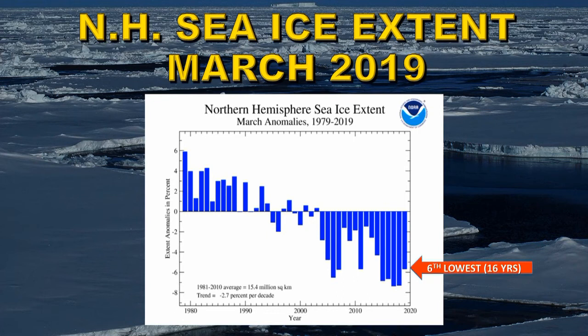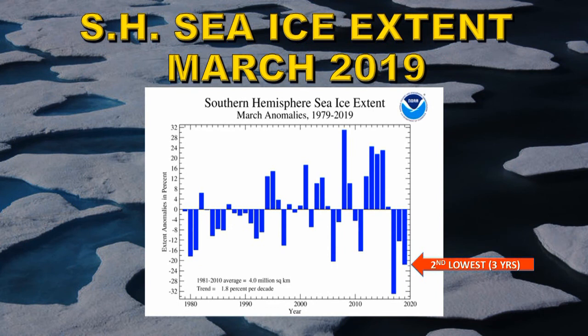Next let's turn to the northern hemisphere sea ice extent for March 2019. It's recorded as the sixth lowest on record — the 16th consecutive year with a below average sea ice extent. For the southern hemisphere sea ice extent, it was the second lowest on record, making three consecutive years with below normal sea ice extent in the southern hemisphere.